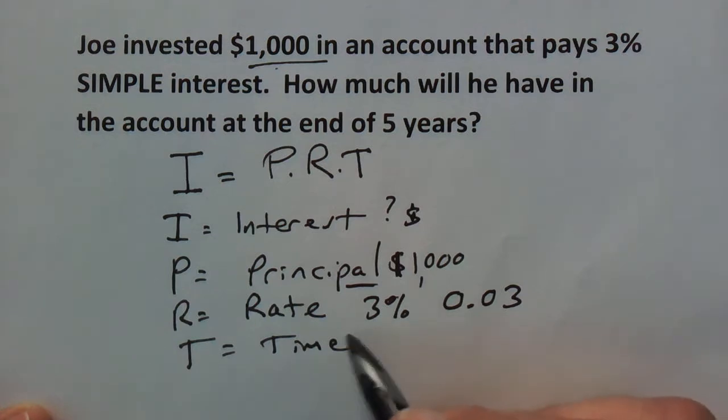I've got a whole video on how to convert decimals to percents and from percents to decimals. So check that out. I've got a link posted here. And time is the amount of time that the money is at work. In this case it's five years.